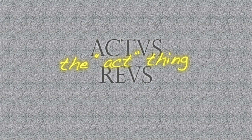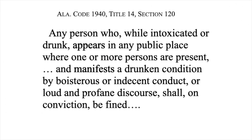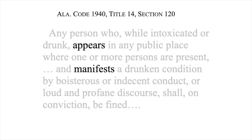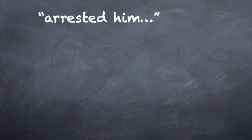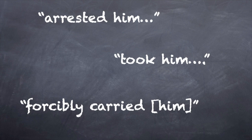The court immediately goes on to say: an accusation of drunkenness in a designated public place cannot be established by proof that the accused, while in an intoxicated condition, was involuntarily and forcibly carried to that place by the arresting officer. So the court reads the statute as requiring the prosecution to show that the defendant committed two voluntary acts — that he appeared and that he manifested. Martin manifested his drunkenness voluntarily, but he did not appear in a public place voluntarily. The evidence shows that the police arrested him, took him, and forcibly carried him into the street.